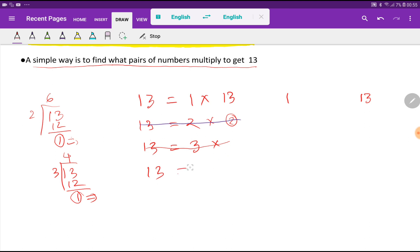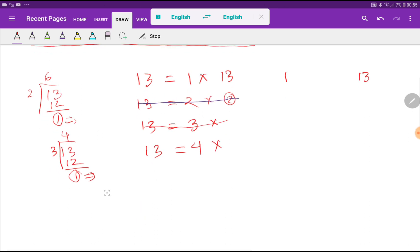Let's take, after 3, let's try for 4. So look, 4, 3, 12, 1. There's a remainder 1, so 13 is not totally divisible by 4. So 4 is not a factor of 13.